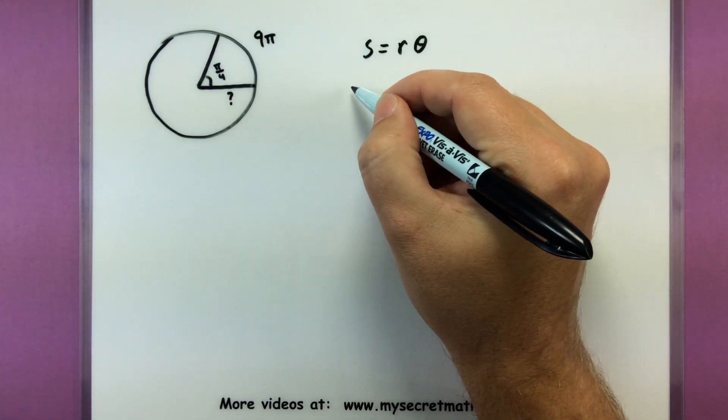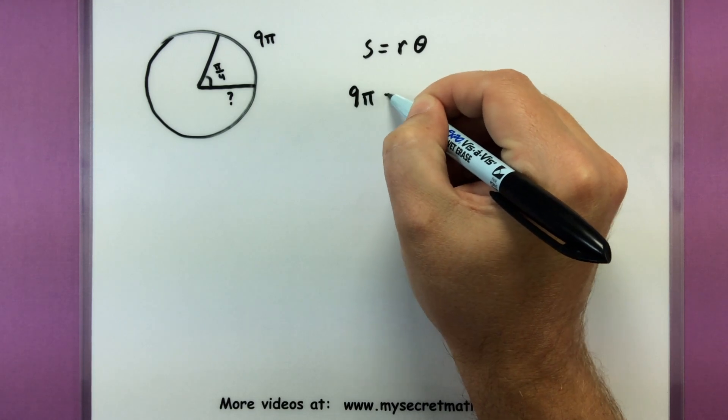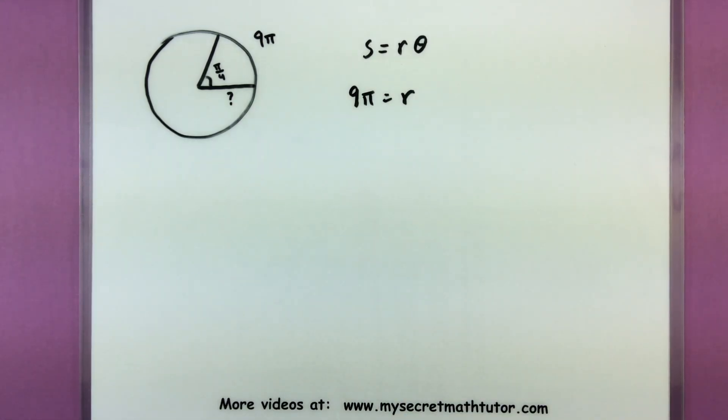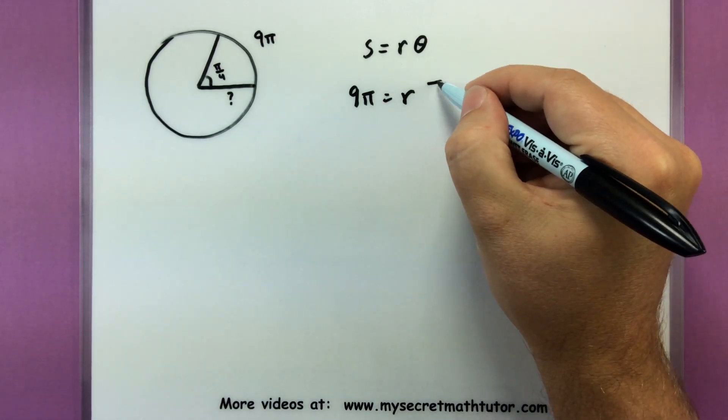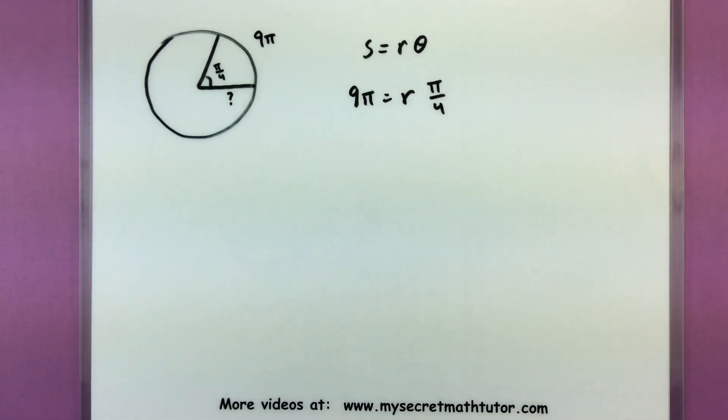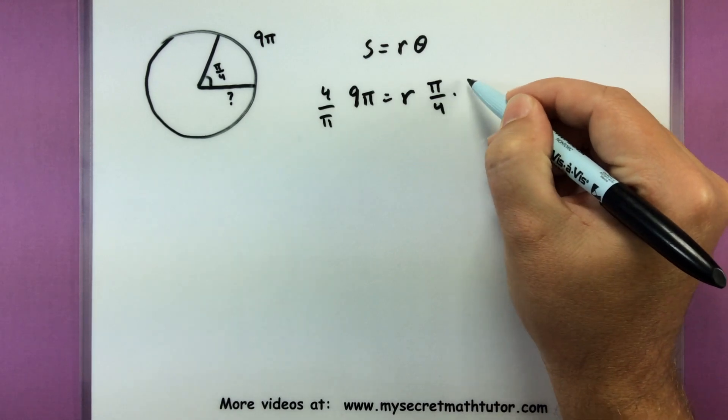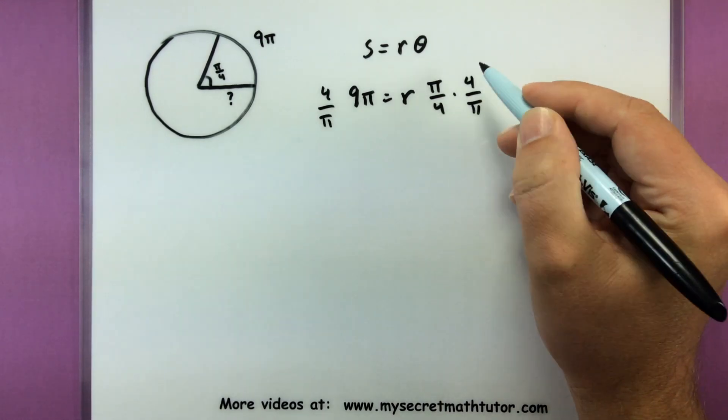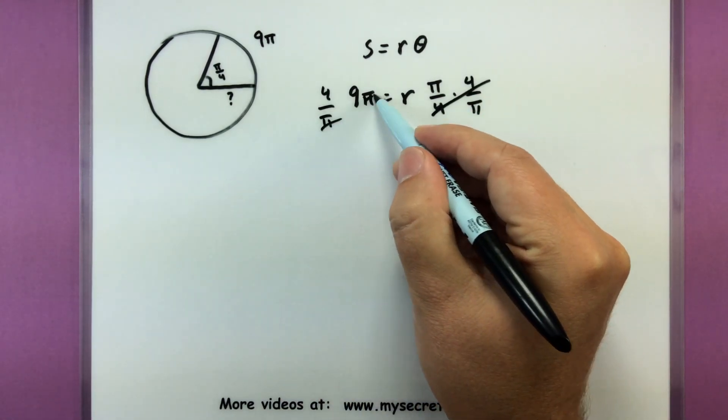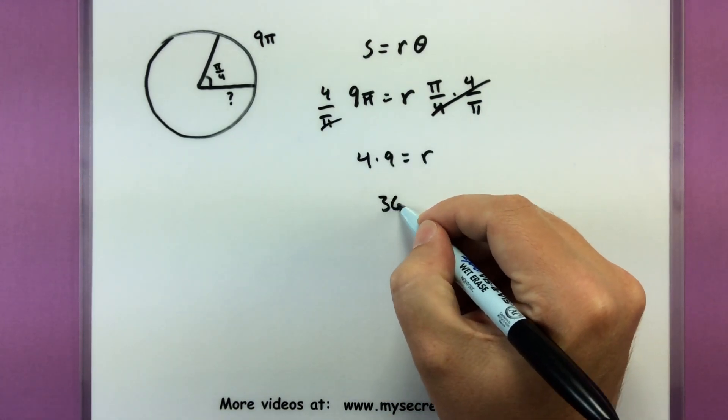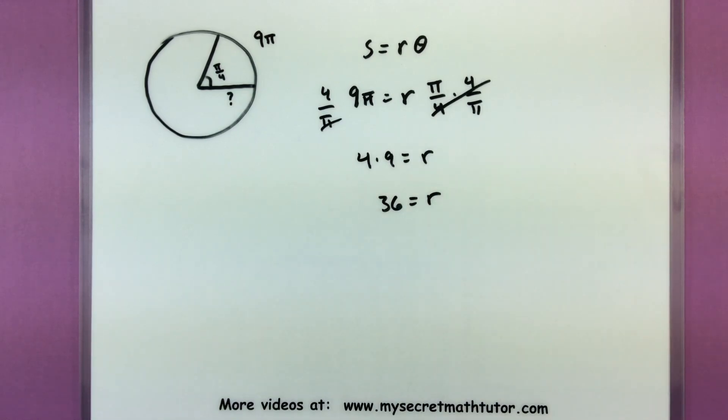We already know the arc length is 9π. We don't know the radius, so we'll leave that as r. The angle in radians is π/4. Now all we have to do is solve for r. We can multiply both sides by 4 divided by π. That gets rid of the π. So 4 multiplied by 9 equals r, or 36. That is the radius of our circle.